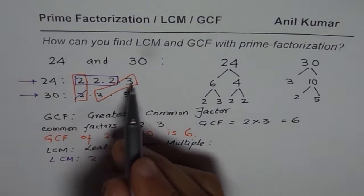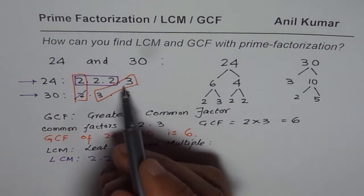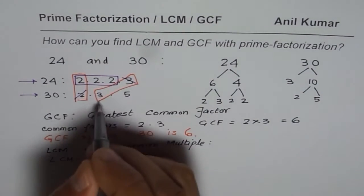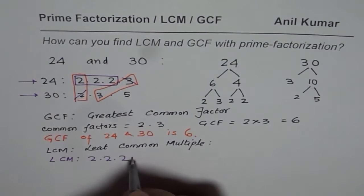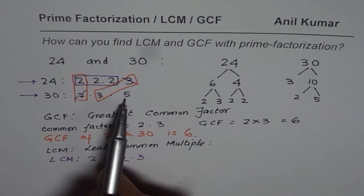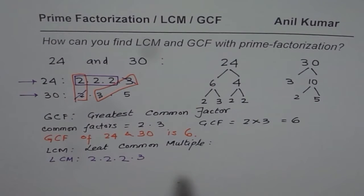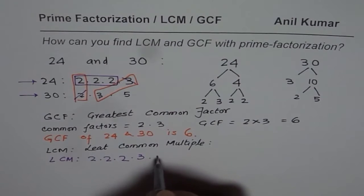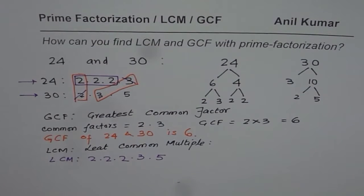Now let us consider 3s. Both 24 and 30 have one 3 each, so we consider just one of them — do not repeat. If a factor is common, drop one of them; that is the whole idea. Then, how many factors of 5? Just one factor of 5, and that is from 30. So we take that 5 and multiply by it. That is how we get the least common multiple.